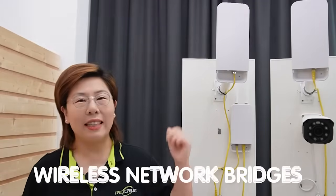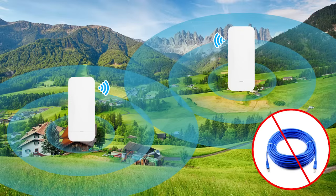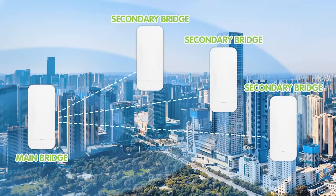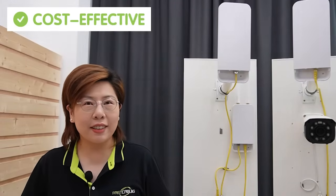This is where wireless network bridges come in. They offer a powerful solution by connecting two or more networks over a wireless connection, eliminating the need for physical cables — extending your network to remote buildings efficiently and cost-effectively. A point-to-multipoint wireless network bridge connects one central point, the main bridge, to multiple remote locations, the secondary bridges. Benefits include being cost-effective by reducing cabling, flexible and scalable as your network grows, and efficient with stable connections over long distances.